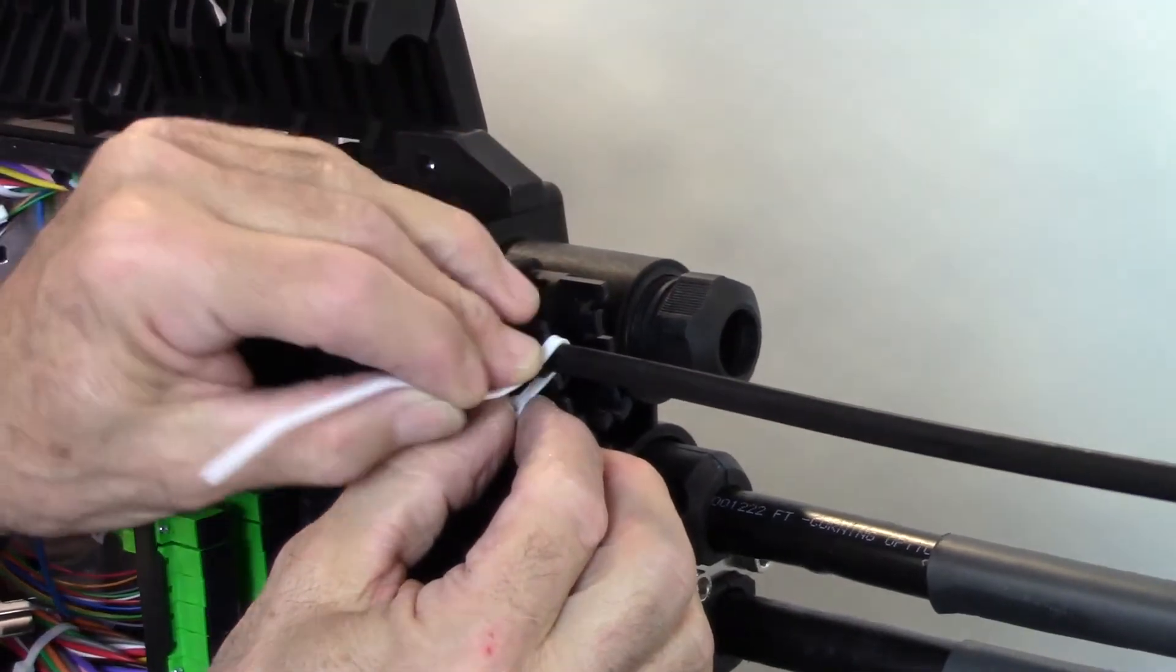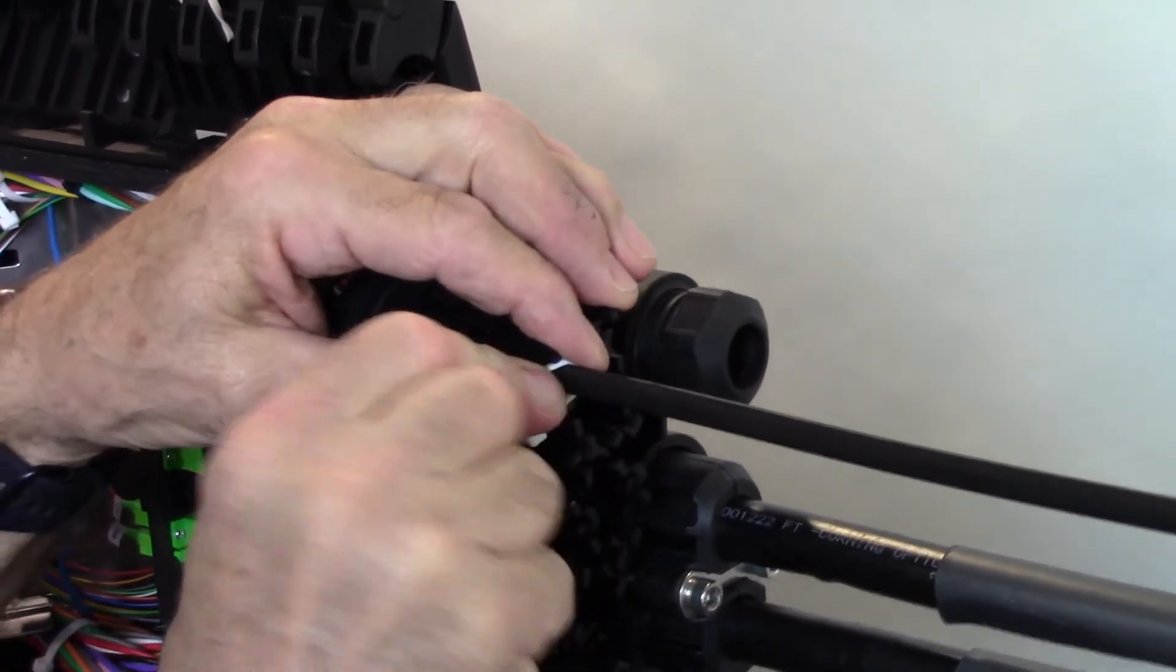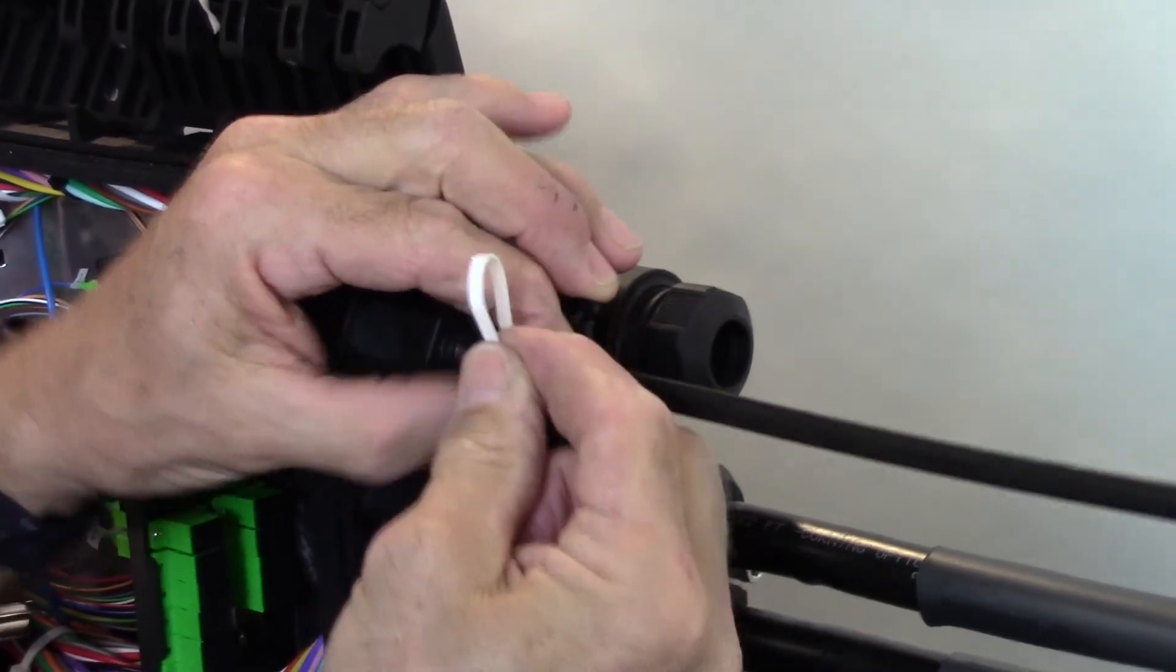Install a cable tie onto the drop cable, securing it to the drop plug. Tighten and trim the cable tie.